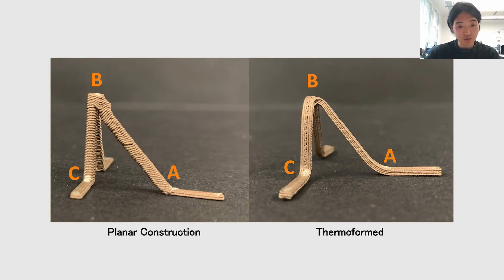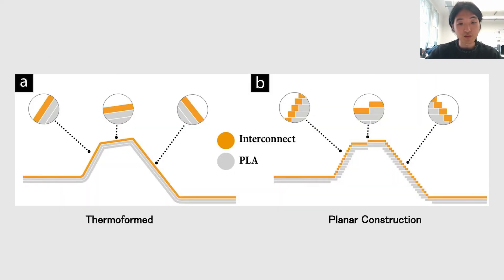As shown in the two samples, the layer structure between points A, B, and C differs significantly for the planar construction in comparison to the thermoformed sample. This motivated us to develop a method of thermoforming flat 3D printed traces into 3D objects, which can maintain the same layer structure for inclining angles and hence provide more consistent finish and resistance across all areas of the surface. The two illustrations here show the differences in the layer structure between the thermoformed trace and traditionally constructed trace.